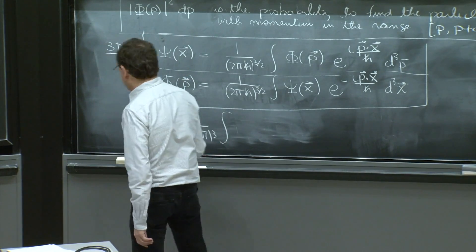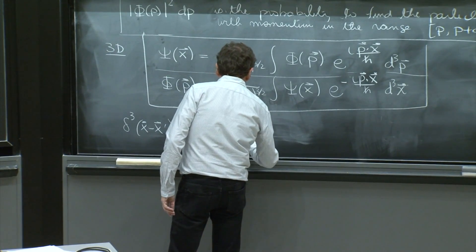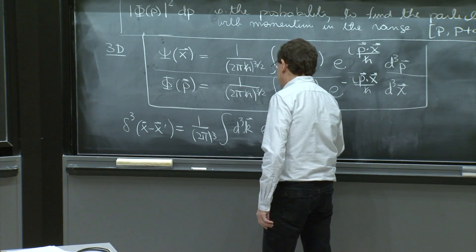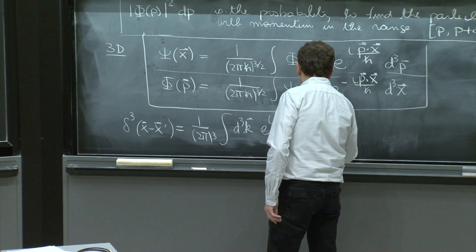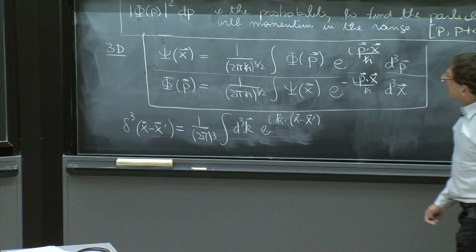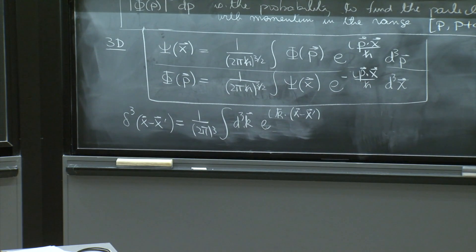integral d cubed k e to the i k vector dot x minus x prime vector. It's all quite analogous.